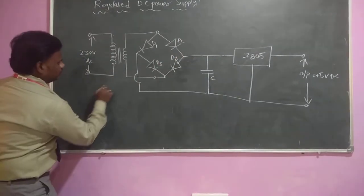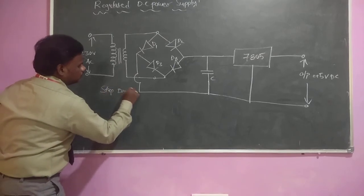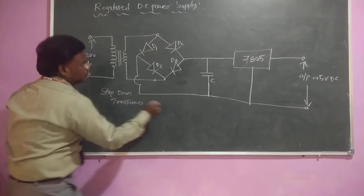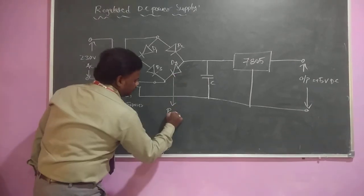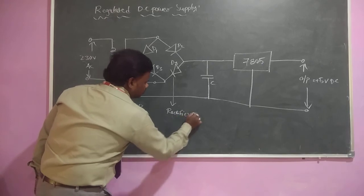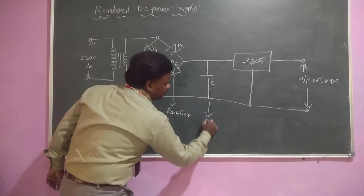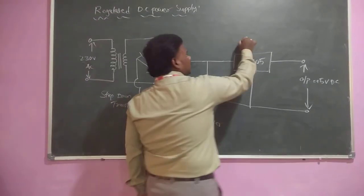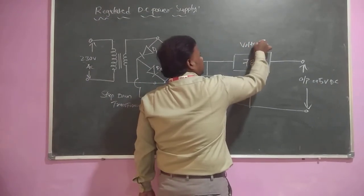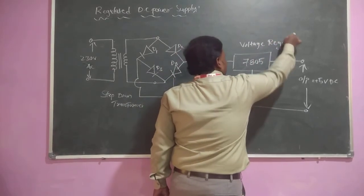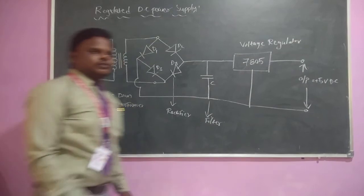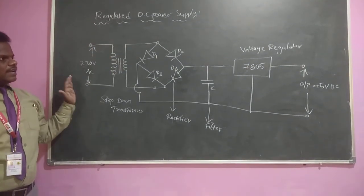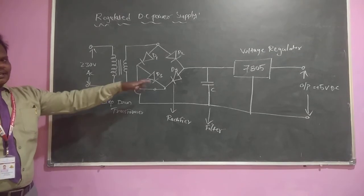This is the step-down transformer, and this circuit is the rectifier circuit. Here I am using a capacitor for filter purpose - a capacitor filter. And this is the voltage regulator. This is the actual circuit of the regulated DC power supply, and this is the actual circuit involved in our adapter circuitry.